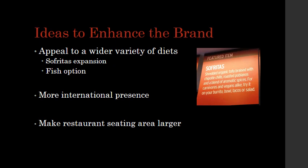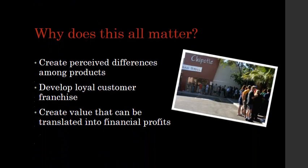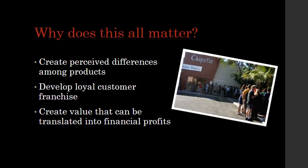Ideas to enhance the brand: I would say Chipotle should appeal to a wider variety of diets. The first vegan option currently debuted in San Francisco, which is Sofritas, and they need to expand it out to the rest of the market. There should also be a fish option in order to appeal to more vegetarians. There also needs to be more international presence and more seating areas in the restaurant. This matters because a brand creates perceived differences among products, develops a loyal customer franchise, and creates value that can be translated into financial profits.